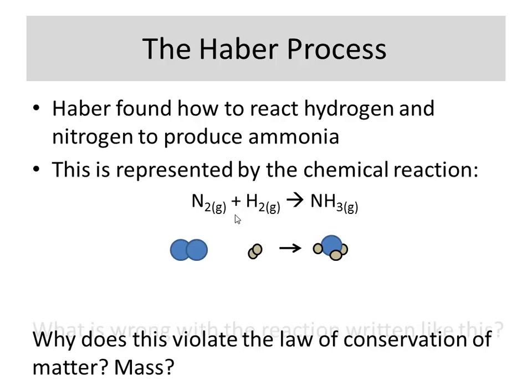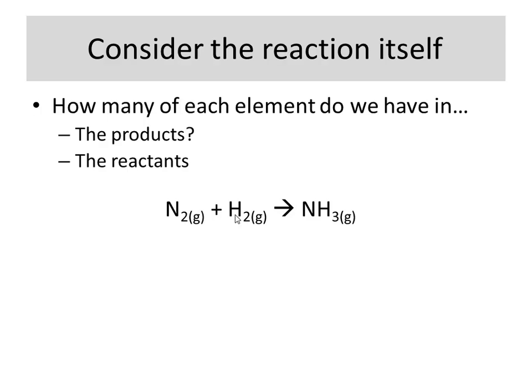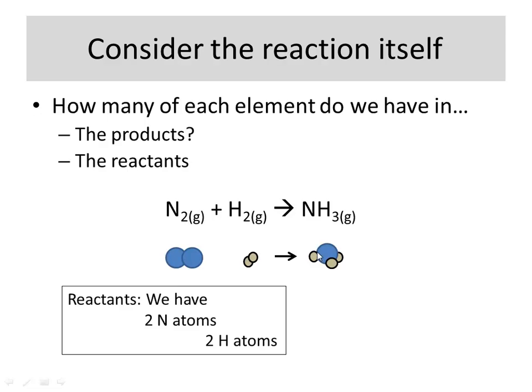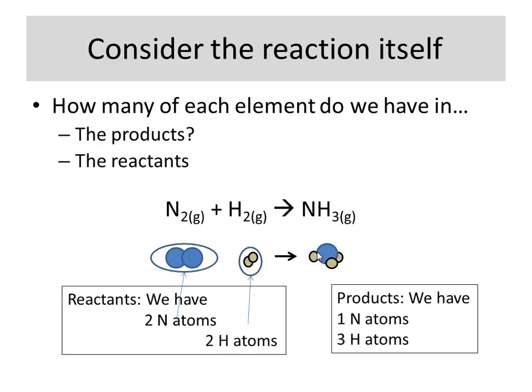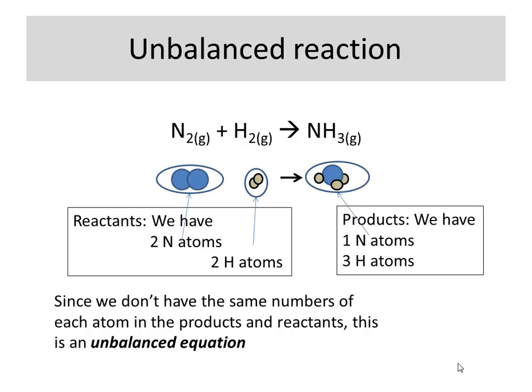So, what I have to think about is let's see what I have each. And I just talked about this. I have two nitrogen atoms to start and two hydrogen atoms to start. I end with one nitrogen atom and three hydrogen atoms. So, this is an example of an unbalanced equation. All right. So, this is an example of an unbalanced equation. All you have to copy down here is the bottom point. Since we don't have the same number of each atom in the products and the reactants, we consider this to be unbalanced.